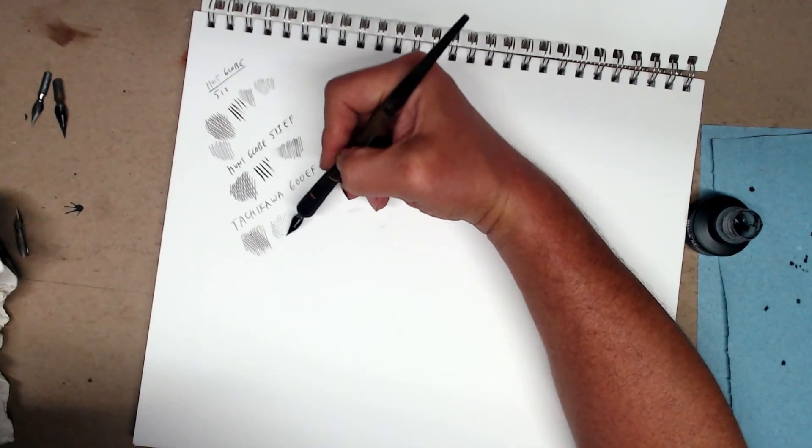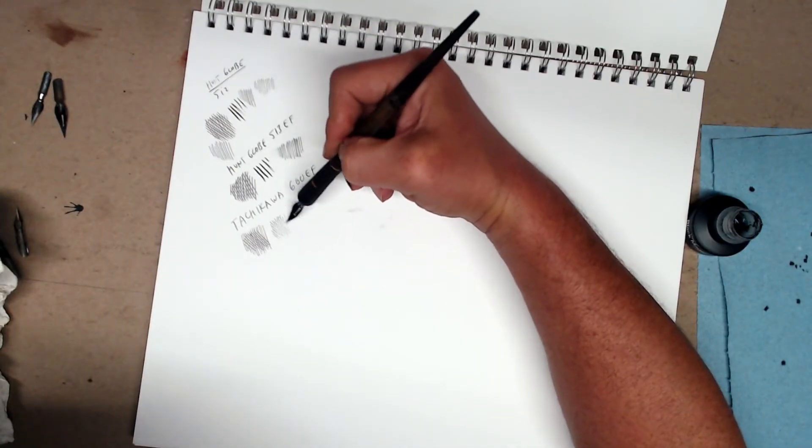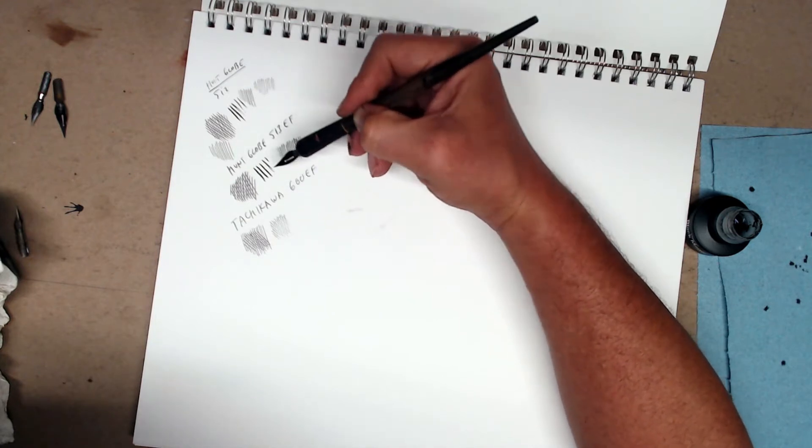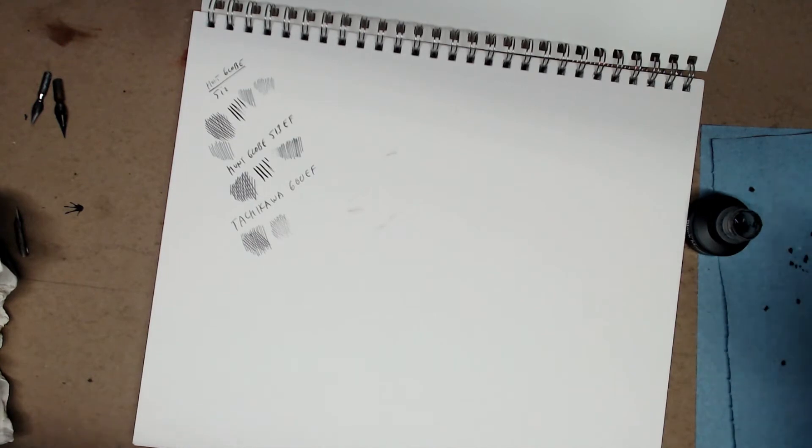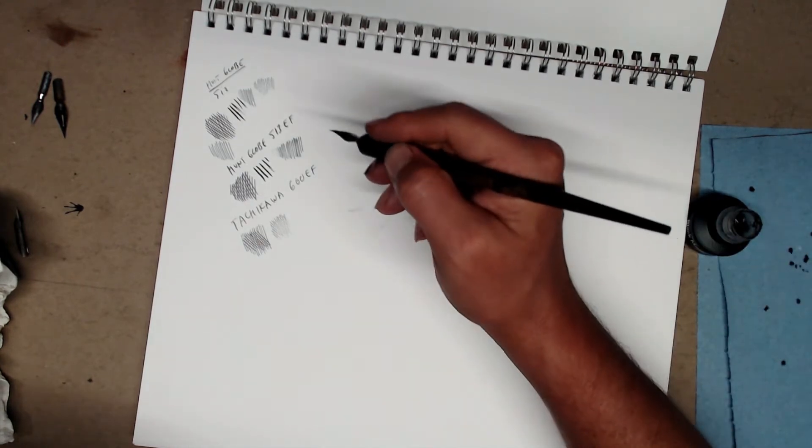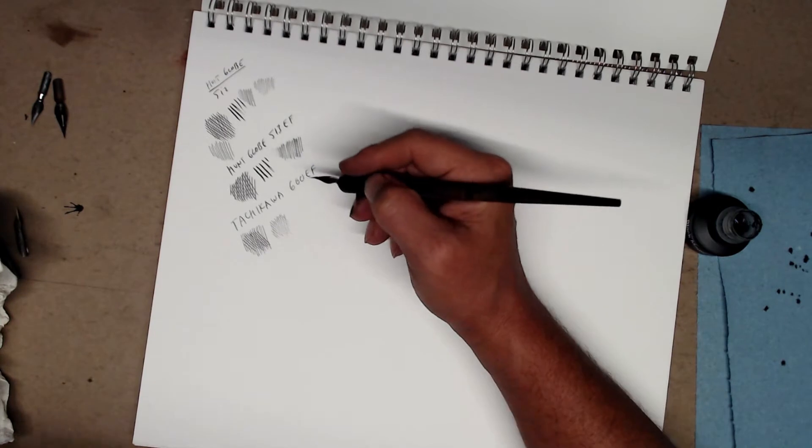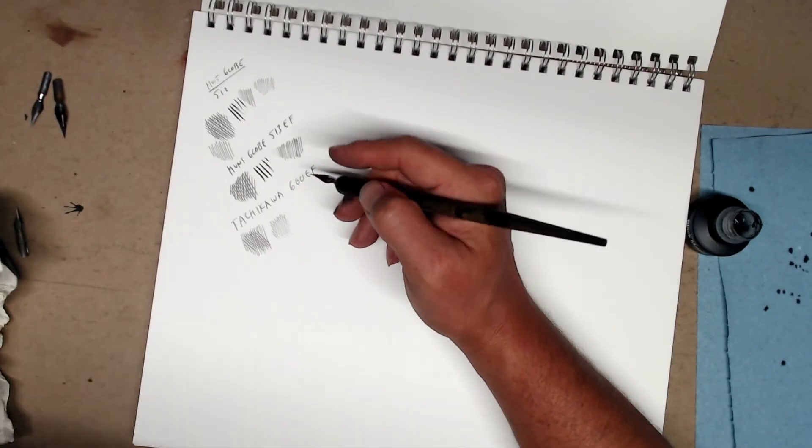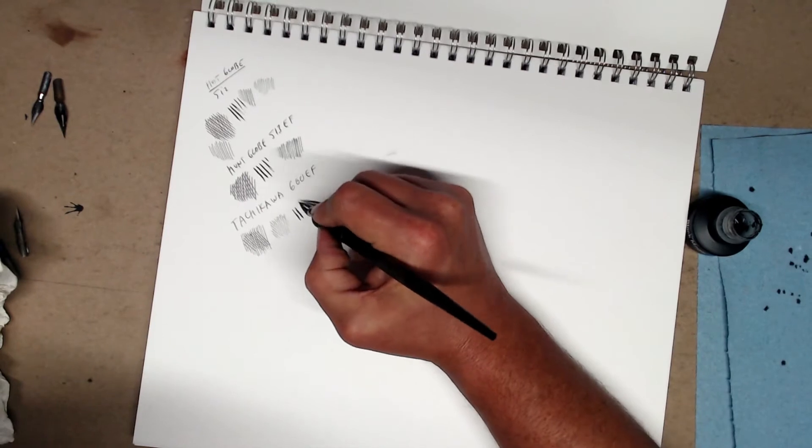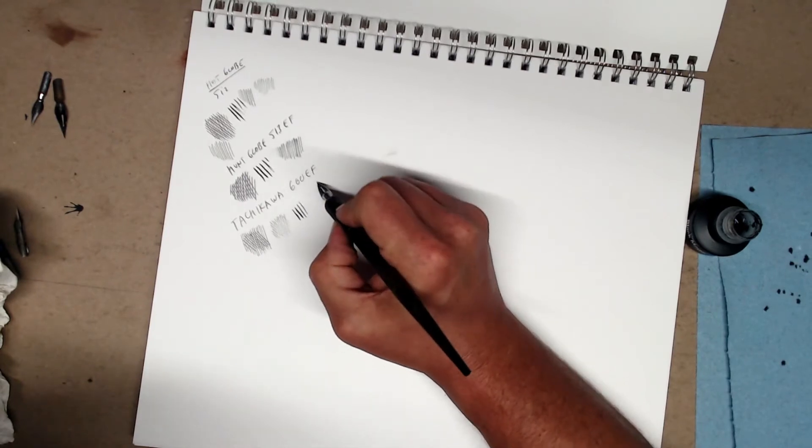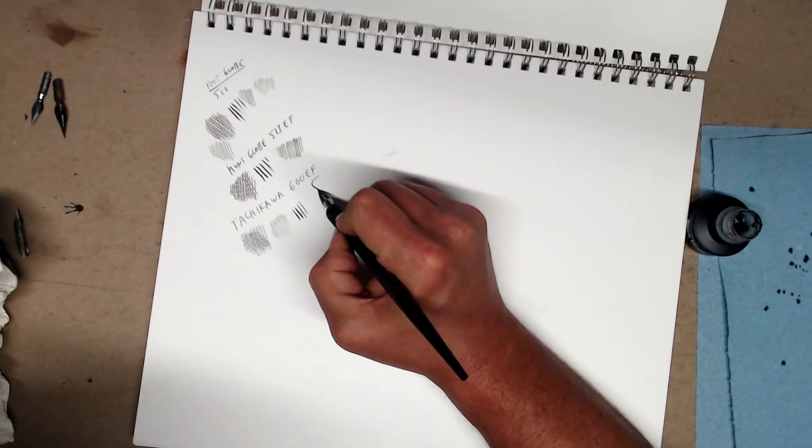And I find that this pen is a little finer than the Hunt Globe, and also writes well in reverse, puts down a super, super thin whisper-like line. This nib is very sensitive, maybe not quite as flexible as the Hunt Globe 513EF. If you like working small, if you like putting down lots of thin hatches, then I recommend going online and buying this nib.